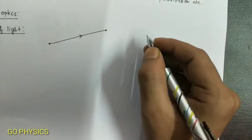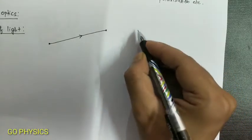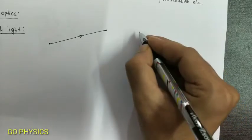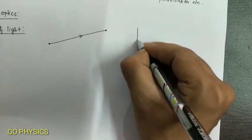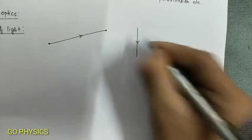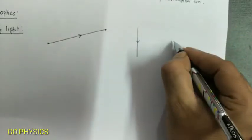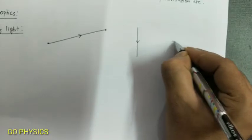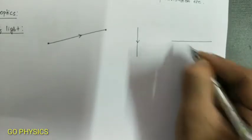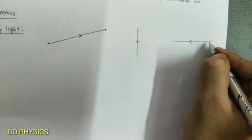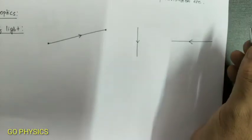If light is coming, suppose, from top to the bottom, then we will show this as a ray of light. If light is coming, suppose, from right to left, then we will draw a ray whose direction is from right to left.